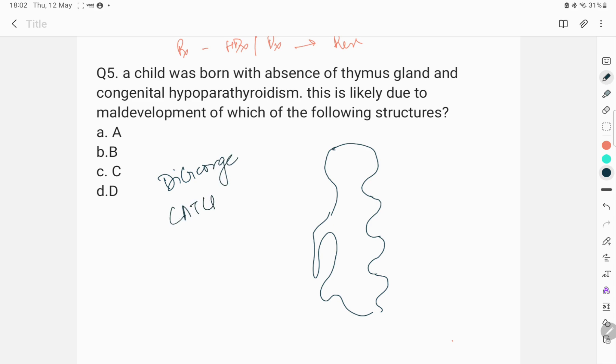We all know that they are talking about DiGeorge syndrome. That is CATCH-22 caused by the maldevelopment of third and fourth pharyngeal arches. But if you have to choose one option, that would be third pharyngeal pouch. That third pharyngeal pouch gives rise to thymus and the inferior parathyroid gland. Fourth pharyngeal pouch gives rise to the ultimobranchial body and the superior parathyroid gland.